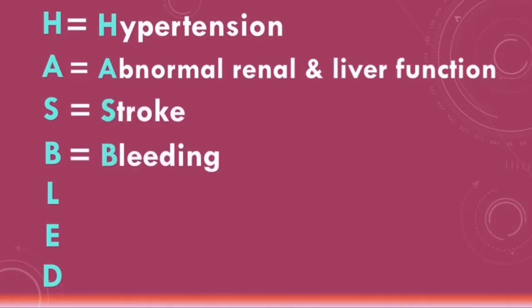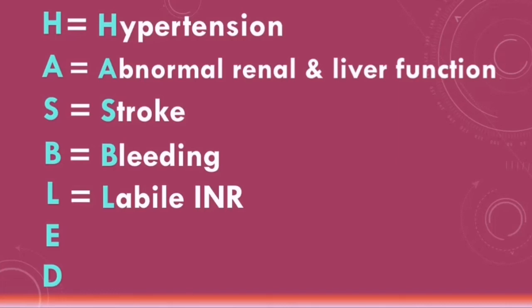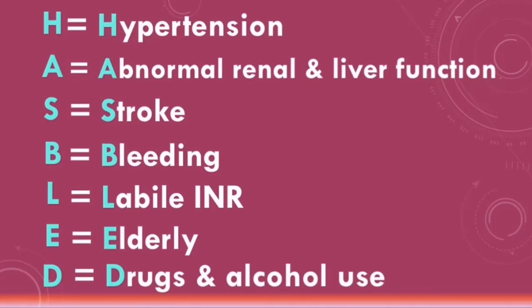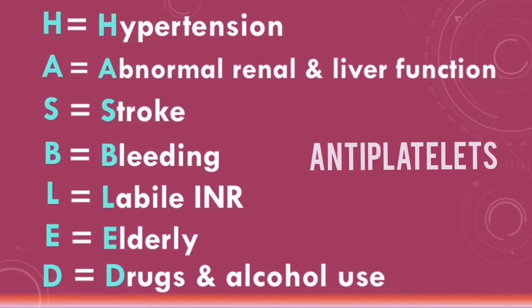B stands for bleeding — a history of major bleeding or a predisposition to bleeding such as a bleeding disorder. L stands for labile INR, referring to an unstable or high INR, or poor time spent in the therapeutic range. E stands for elderly — patients aged 65 or above. D stands for drugs and alcohol use, where drugs includes antiplatelet medications and NSAIDs that increase bleeding risk.